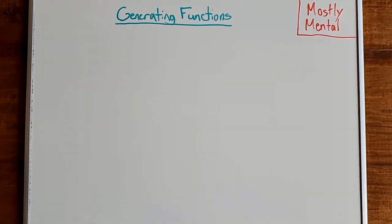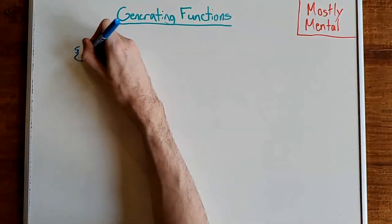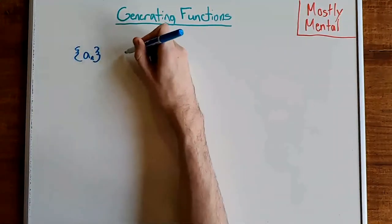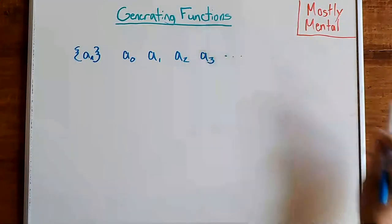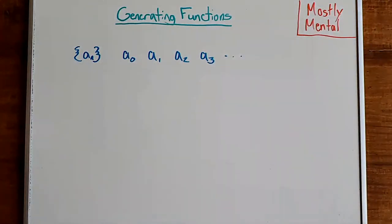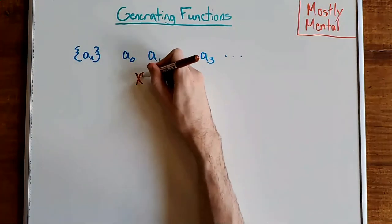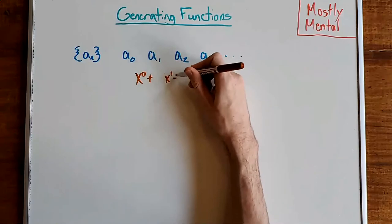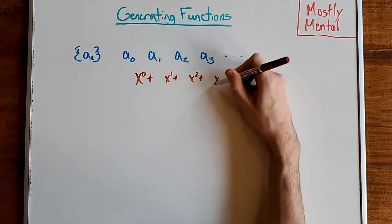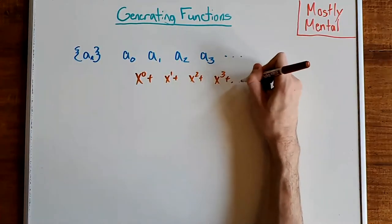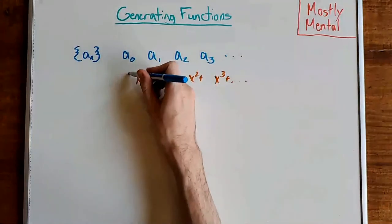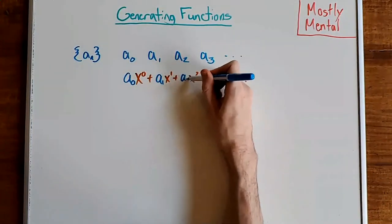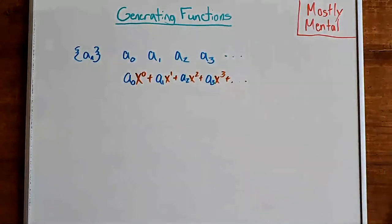Let's start with a couple definitions. Given a sequence a sub n — that is a0, a1, a2, a3, and so on — we define the generating function for that sequence to be the sum of powers of x: x to the 0 plus x to the 1 plus x squared plus x cubed, and so on, multiplied by the corresponding terms in our sequence: a0, a1, a2, a3, and so on.